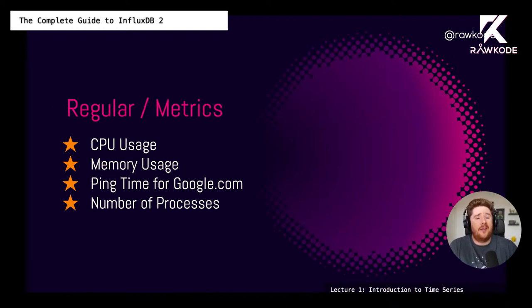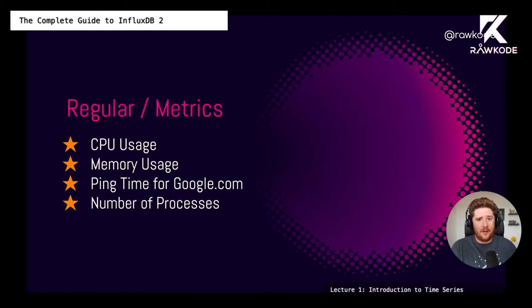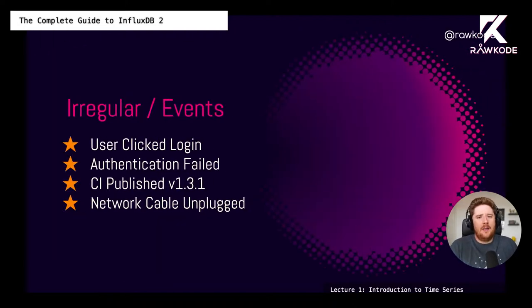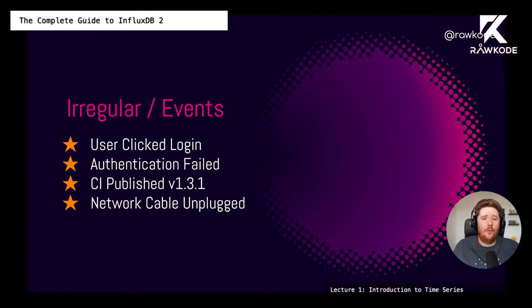Good examples of metrics: CPU, memory usage, ping to google.com, and number of processes from a kernel — values that change over time but are always available. Great examples of events: you cannot predict when a user is going to click the login button, when someone is going to get their password wrong, when the next CI build is going to be published, or when a network engineer is going to trip over a rack and pull out a cable. These are still important events and we can build aggregate metrics from them, but they are irregular and unpredictable.